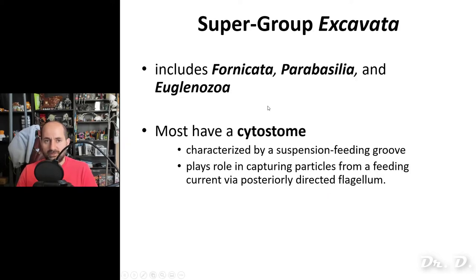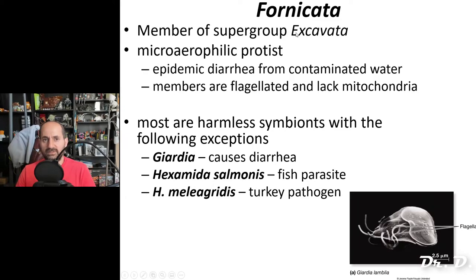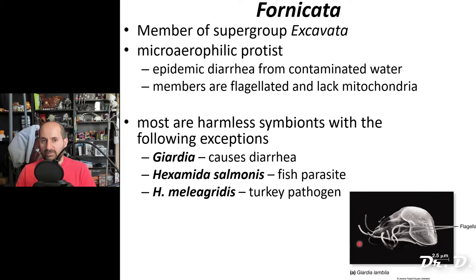We're going to talk about the first supergroup, Excavata. Excavata includes the Fornicata, Parabasalia, and the Euglenozoa. Most of these possess a cytosome, which is a suspension feeding groove. The first type of Excavata is known as Fornicata — these are microaerophilic protists, meaning they grow where there's a low concentration of oxygen. An important member you should know about is Giardia, which is the example for Fornicata.